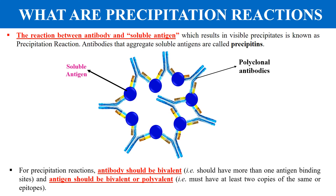There is a condition for precipitation reactions to occur: the antibody must be bivalent, meaning it should have more than one antigen binding site and bind to more than one antigen. Similarly, the antigen must be bivalent or polyvalent — it must have at least two copies of the same epitope. This bivalency of both antibody and antigen is the basic requirement for the precipitation reaction.